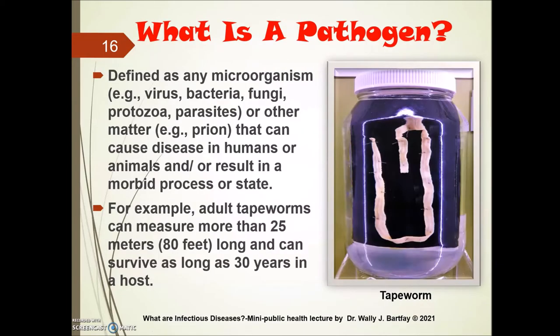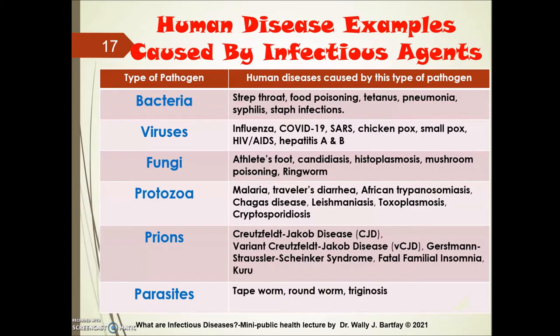A pathogen is defined as any microorganism — it could be a virus, bacteria, fungi, protozoa, parasite, or prion — that can cause disease in humans or animals and result in a morbid process or state. To the right is an example of a tapeworm. Adult tapeworms can measure more than 25 meters, or 80 feet, in length and can survive in humans for as much as 30 years.